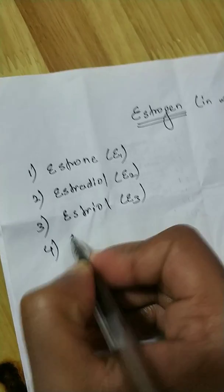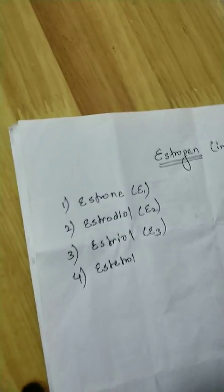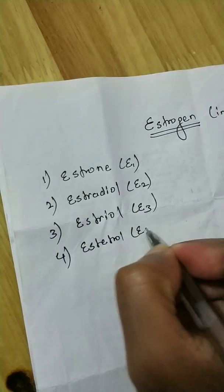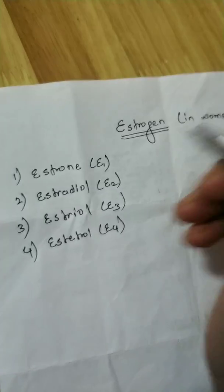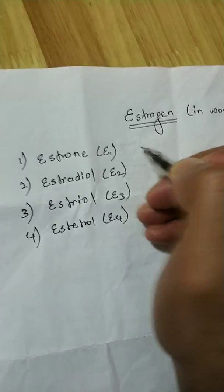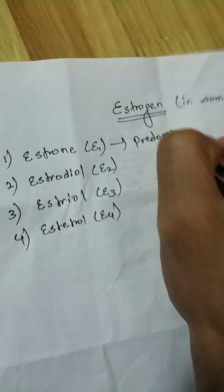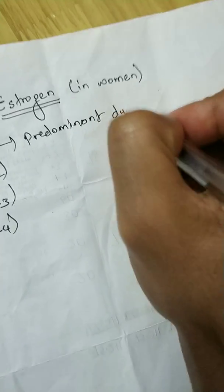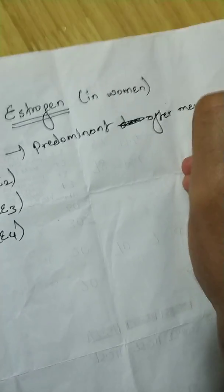There is a fourth one also, which is produced only during pregnancy — that is estetrol, E4. Now let's discuss at which stage each one is predominant. E1 is predominant in women after menopause.